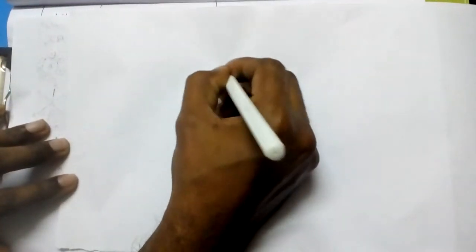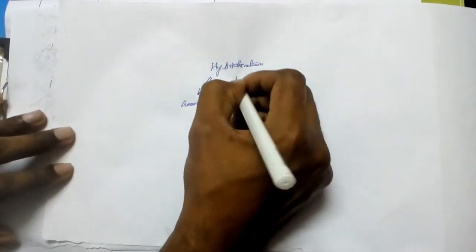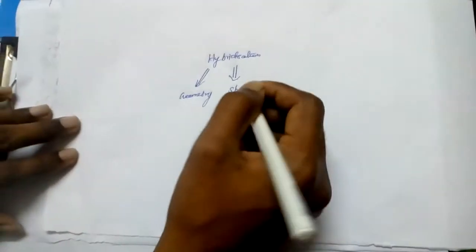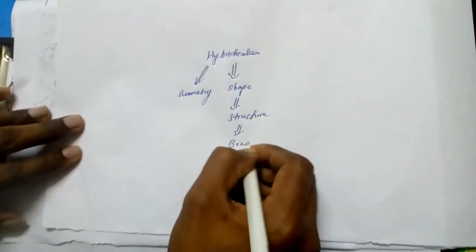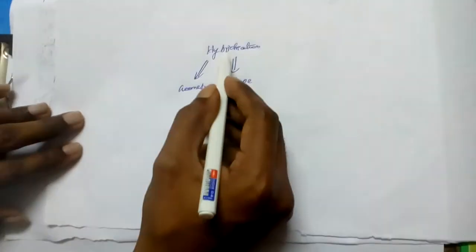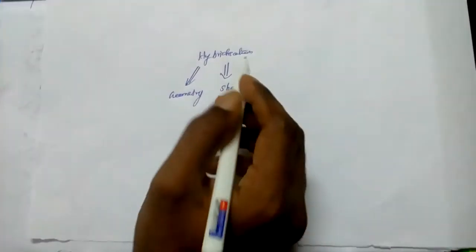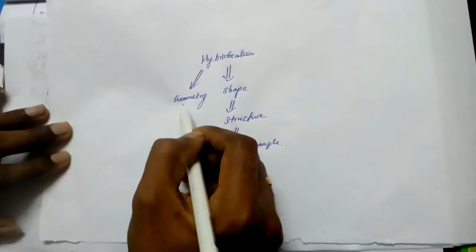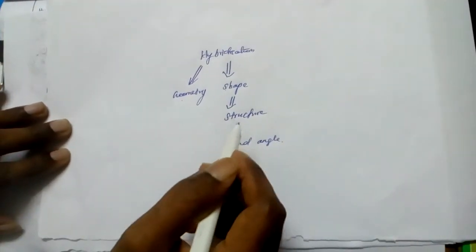If you know the hybridization, you can predict the geometry. If you know the bond pair and lone pair electrons in a molecule, you can predict the shape. If you know the shape, you can predict the structure. If you know the structure, you can predict the bond angle of the given molecule. Please watch my previous video on hybridization to understand how to calculate hybridization.